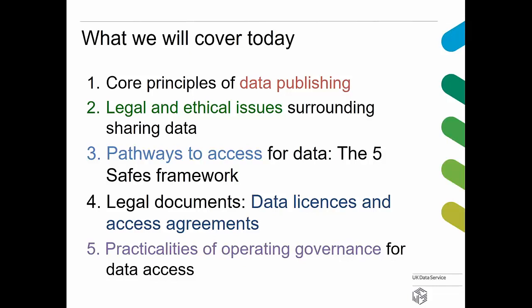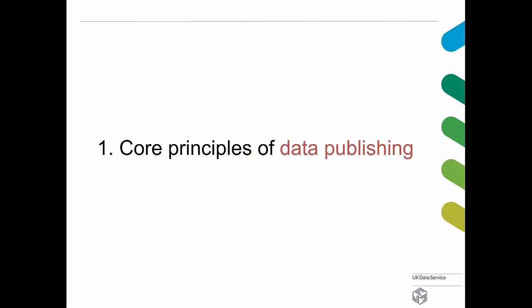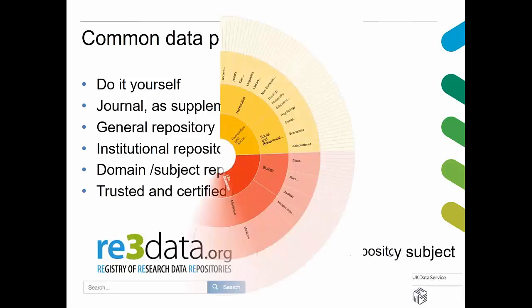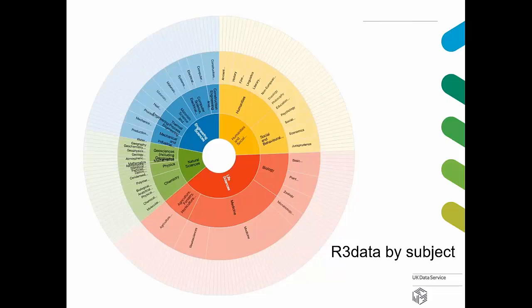The first part, a short part, covers some core principles of data publishing. Many of you are already familiar with these principles and operate data publishing mechanisms. There are many different publishing routes, from DIY — handing something out on a memory stick or CD — to publishing online, through to the trusted digital repository where we have certification and preserve data according to international standards. The R3 data repository registry now contains over 1,500 repositories covering a huge range of subject areas.